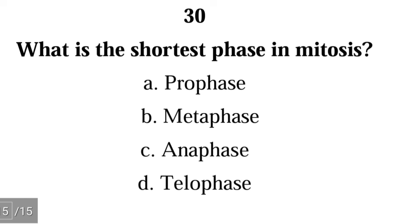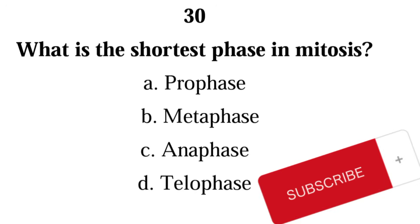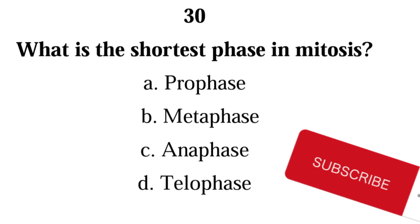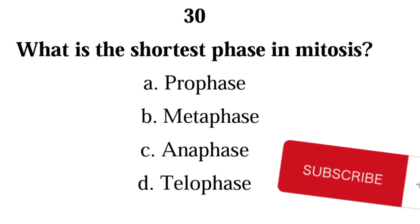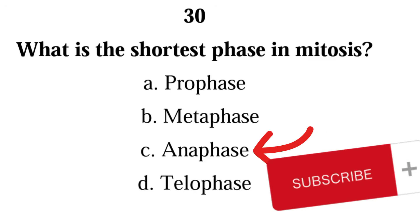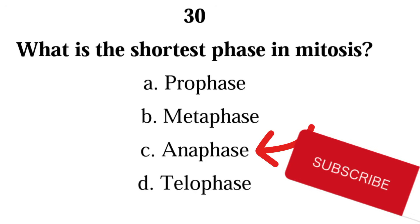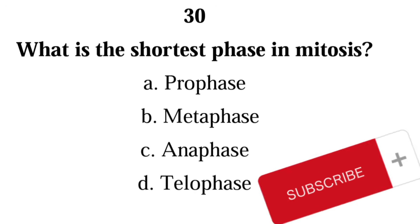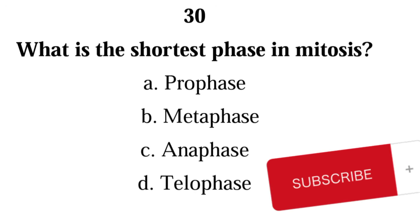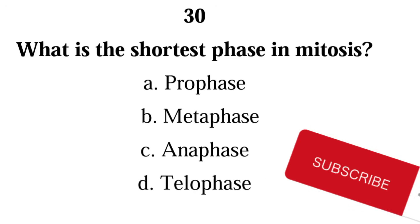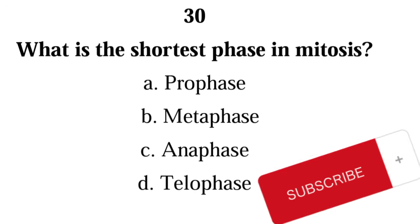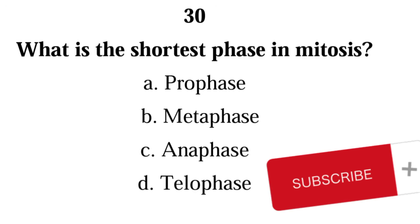Question 30: What is the shortest phase in mitosis? A) prophase, B) metaphase, C) anaphase, D) telophase. The correct answer is C) anaphase — anaphase is the shortest phase in mitosis. Like this video, share it with your friends and let me know your thoughts in the comment section. Thank you.